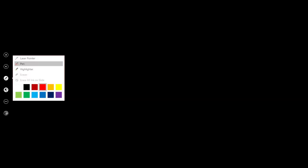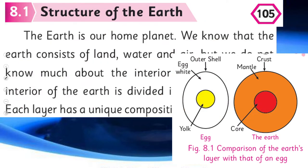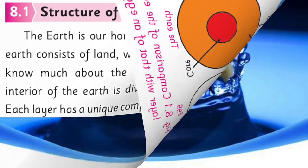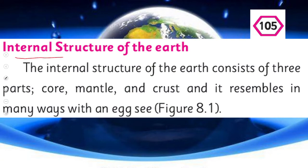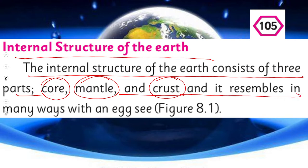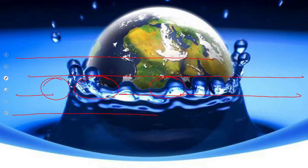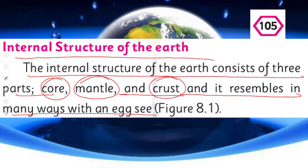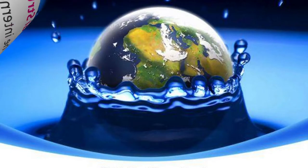Just as the egg has three layers — the shell, the white part, and the yellow part — similarly, the earth also has crust as the outer part, then the inner mantle, and then the very inner portion that is the core. We will start with the internal structure of the earth. The internal structure of the earth consists of three parts — core, mantle, and crust — and it resembles in many ways with an egg. Earth aur egg jo hai, layer wise they are very similar.